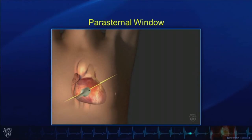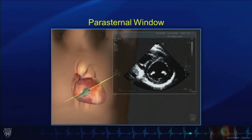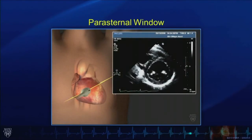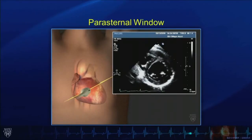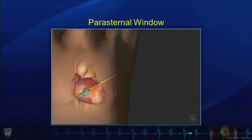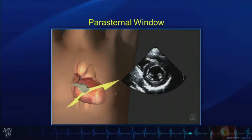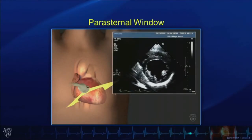By moving slightly inferiorly, we're actually moving into the left ventricle. This is the short axis view at the level of the mitral valve. By either angling or sliding down a little further toward the apex, we then see the left ventricular short axis view at the level of the papillary muscles.